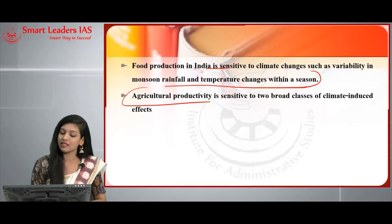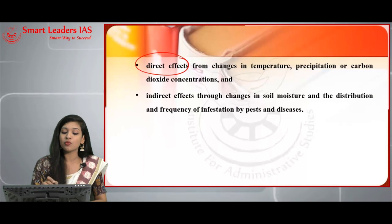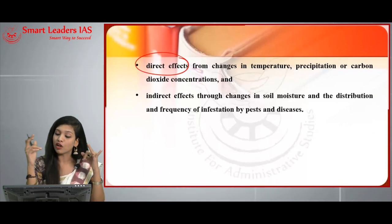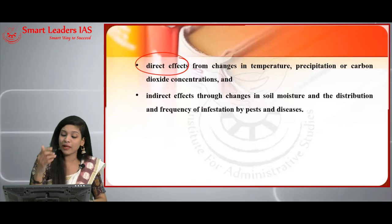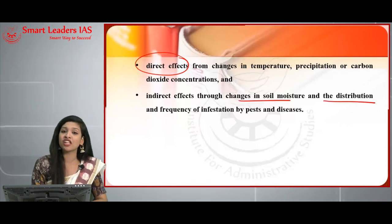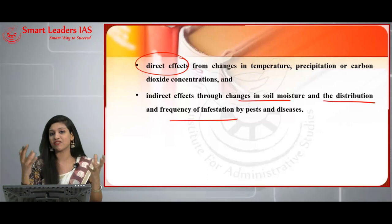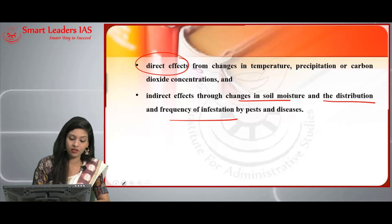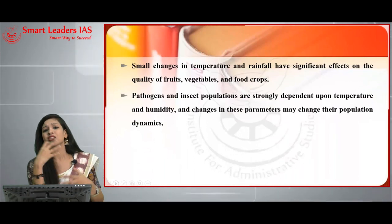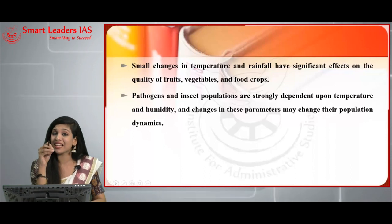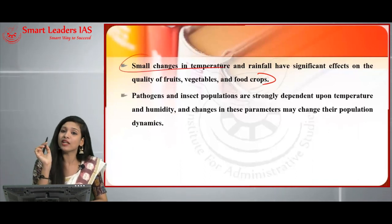The direct effect comes from changes in temperature, precipitation, or CO₂ concentrations. The indirect effect occurs through changes in soil moisture and the distribution and frequency of pest and disease infestations. Even a small change in temperature or rainfall can lead to a significant impact on food crops — small changes in temperature and rainfall have a significant effect on the quantity and quality of fruits, vegetables, and food crops.